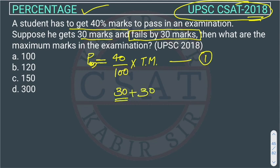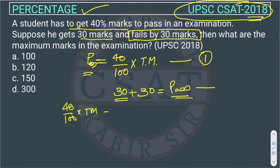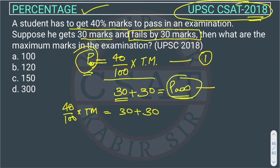If we add 30 marks he will pass the exam. So this pass and this pass will be equal. The equation becomes: 40/100 × Total Marks = 30 + 30, because both sides represent the passing marks. So 30 + 30 = 60.